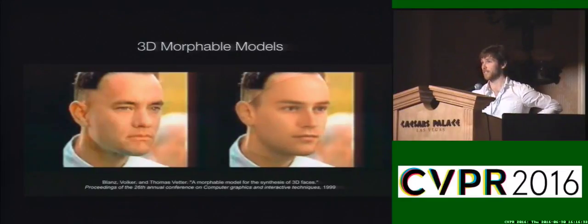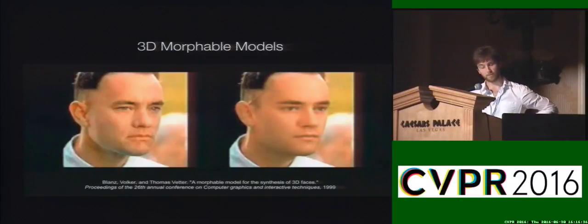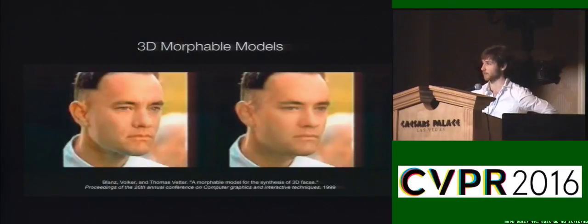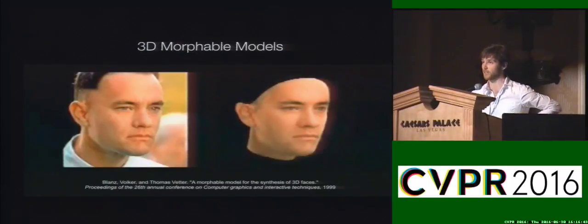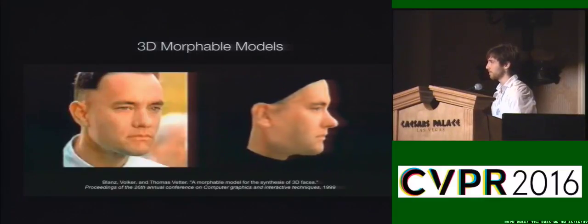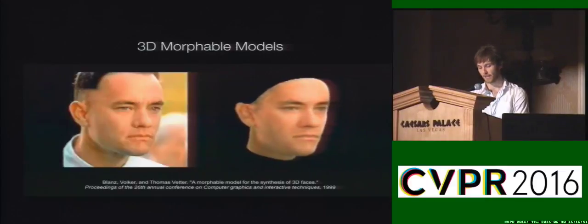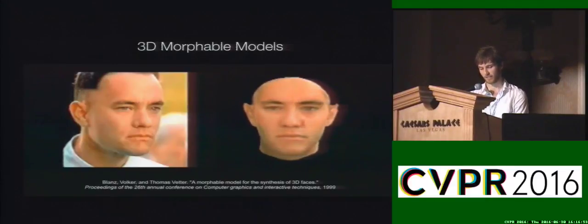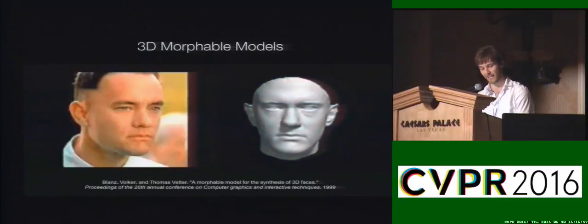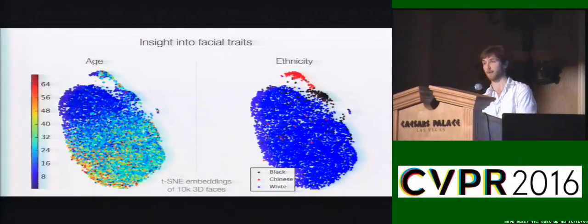Morphable models are powerful 3D statistical models of the human face. In the original formulation, a morphable model was shown to be capable of inferring a full 3D facial surface from a single image of a person, shown here. Their use has since blossomed into many other fields. A morphable model is constructed by performing dimensionality reduction, typically PCA, on a set of training facial meshes placed in dense correspondence. Existing techniques for establishing accurate correspondences required painstaking manual annotation, and so were never employed on larger datasets.